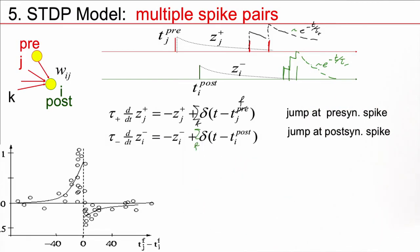The net result of all this is that the total change of this weight from presynaptic neuron J to postsynaptic neuron I can be written as a sum over all postsynaptic spikes and all presynaptic spikes. So, this is a very simple model. It's a pair-based model